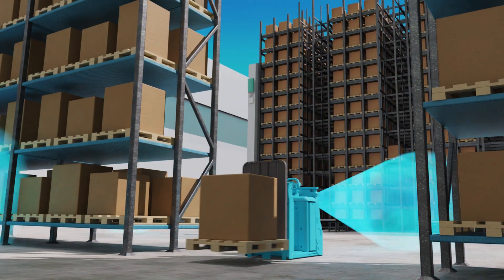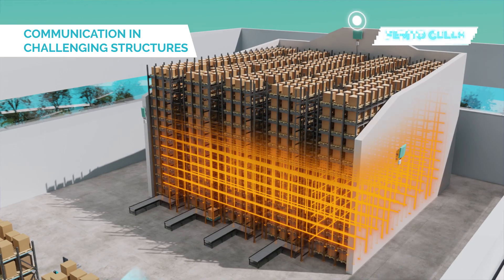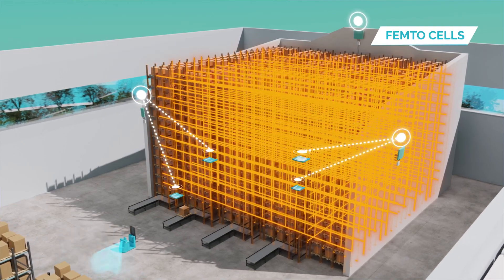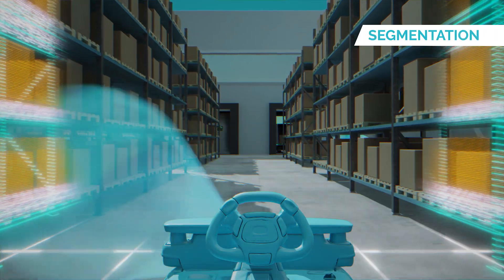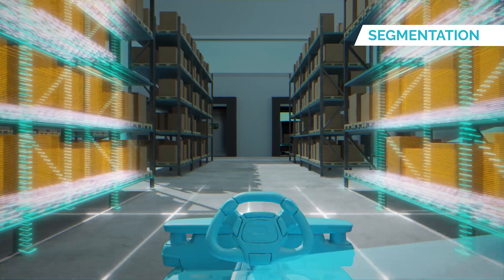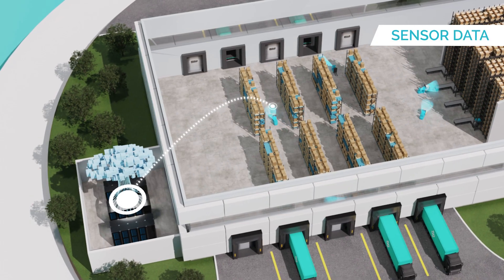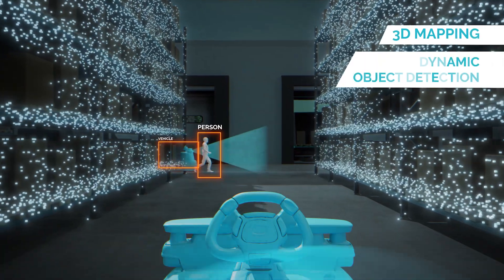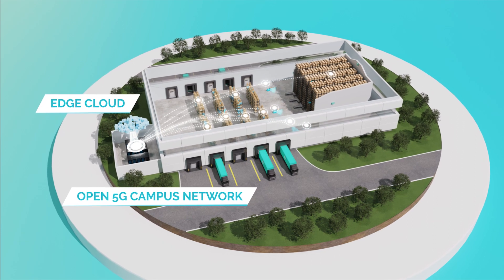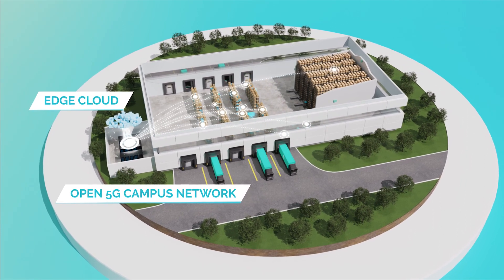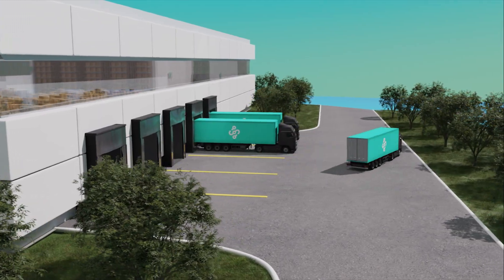5G also enables a large number of agile multi-shuttles in challenging structures to exchange system-relevant information. A continuous 3D mapping is enriched with semantic information of the objects. This 3D map is continuously updated and dynamic objects are filtered and removed for a clean map. The aim is to improve internal transport processes and increase safety in storage areas.